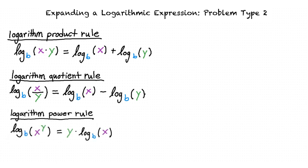The logarithm power rule says that the base b logarithm of x to the y power is equal to y times the base b logarithm of x.